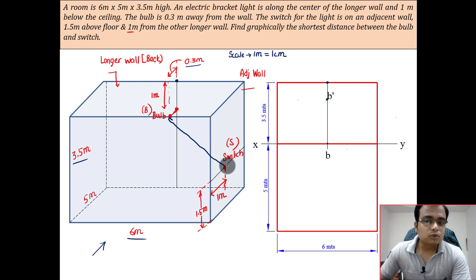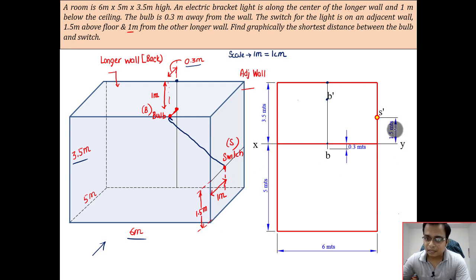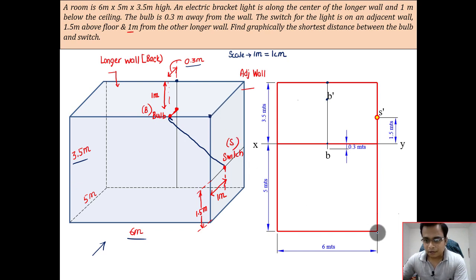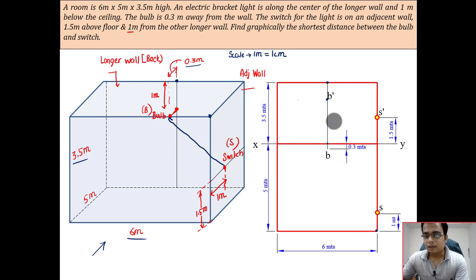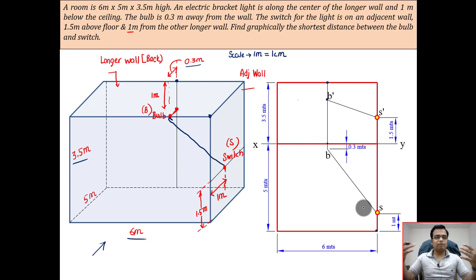In the same manner, we can locate the front and top views of the switch. In the front view, the switch appears at a height of 1.5 meters — that's 1.5 centimeters on the drawing sheet. In the top view, corresponding to the switch, it appears one meter in front of the front wall — so we go one centimeter from that wall. That's the top view of the switch. Now connect the front views and connect the top views. This line between the bulb and switch appears in both the front view and the top view.